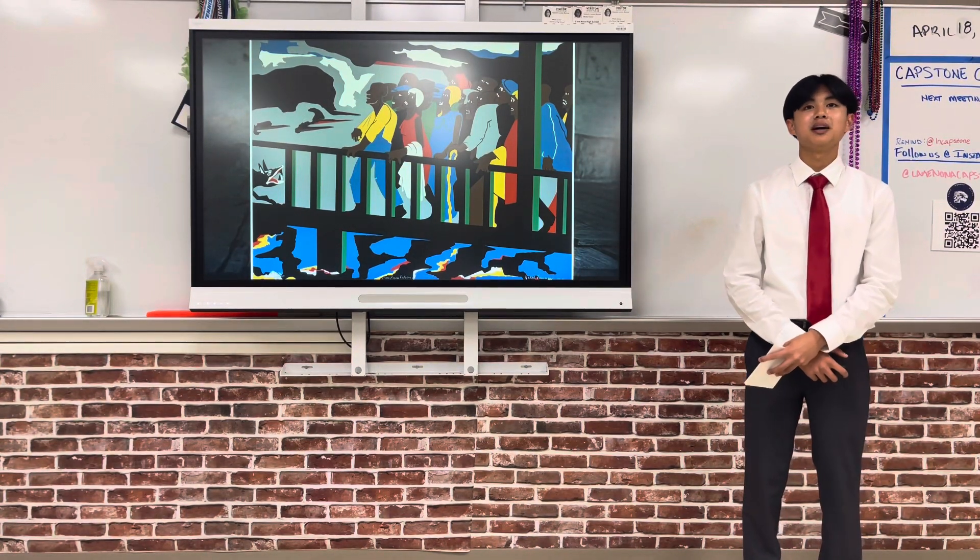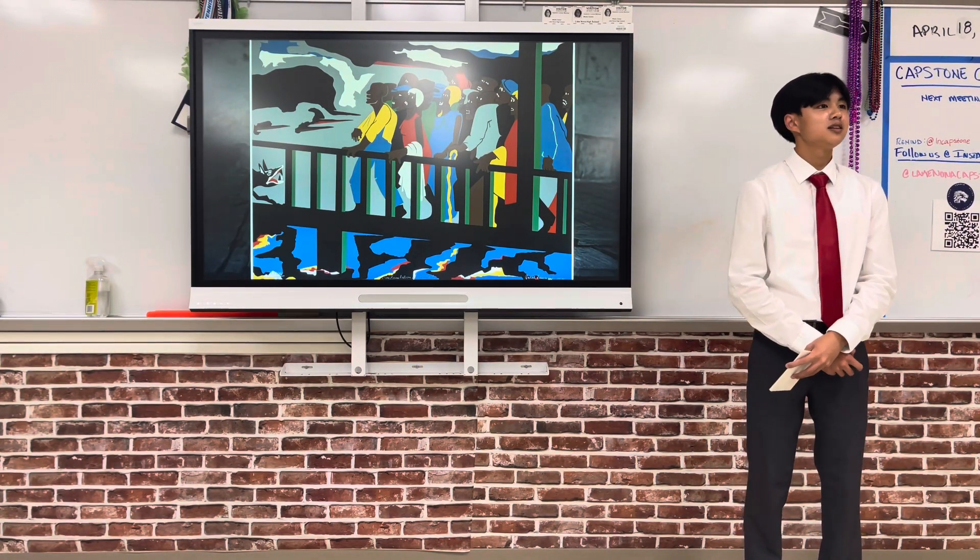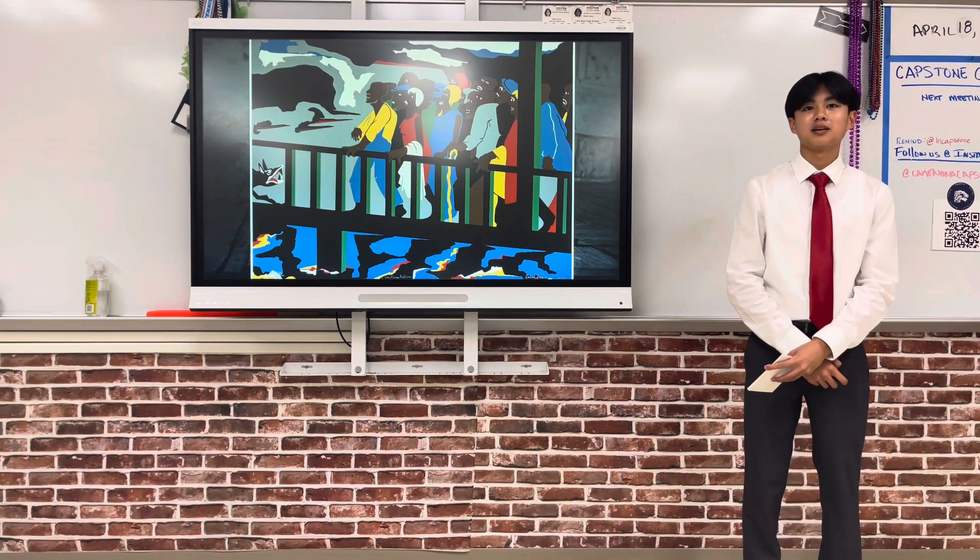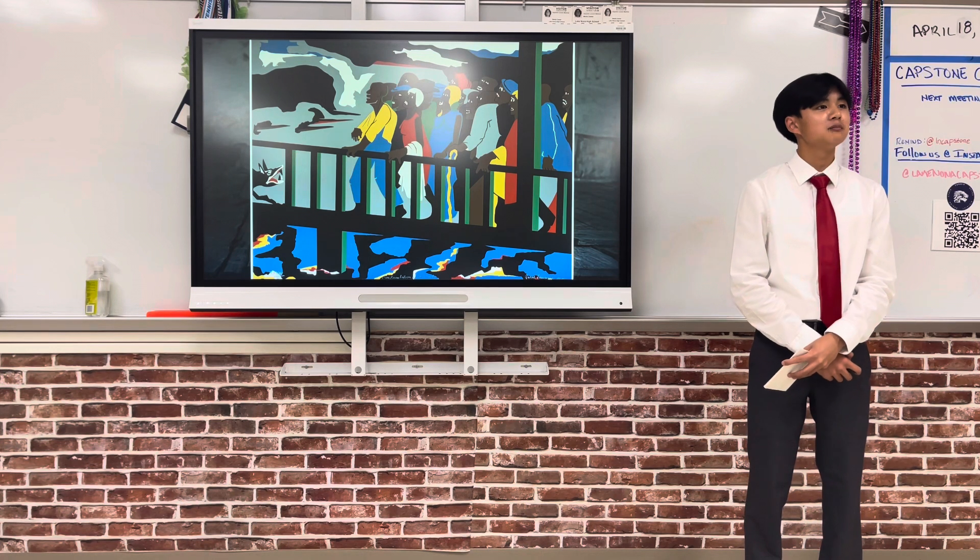Confrontation on the Bridge is a painting created by Jacob Lawrence, depicting the 1965 Selma to Montgomery marches, which were peaceful protests led by African Americans in response to the blocking of African American voting rights.